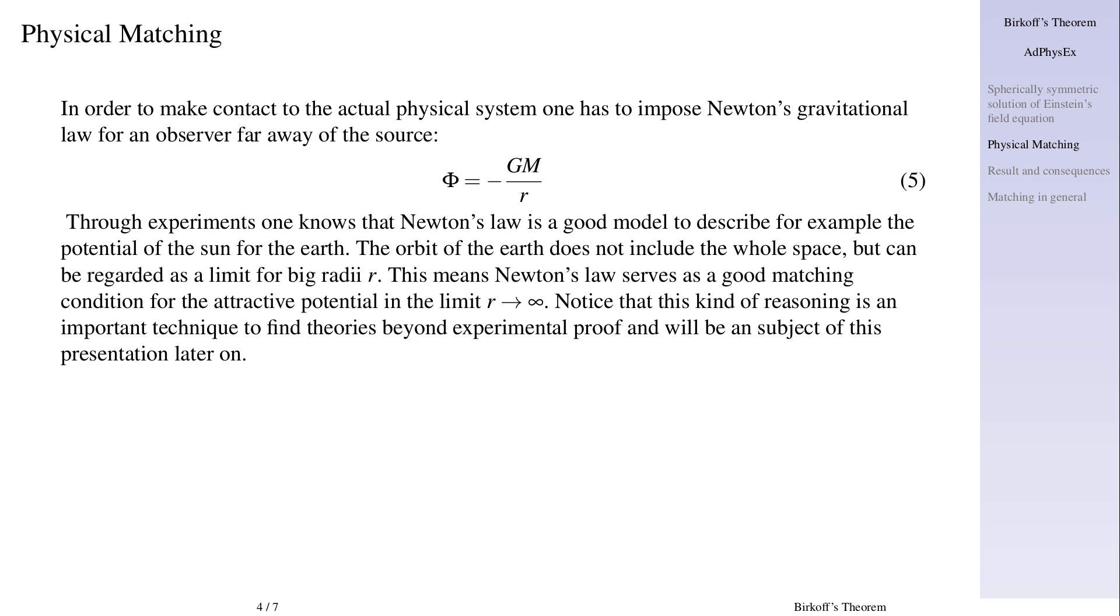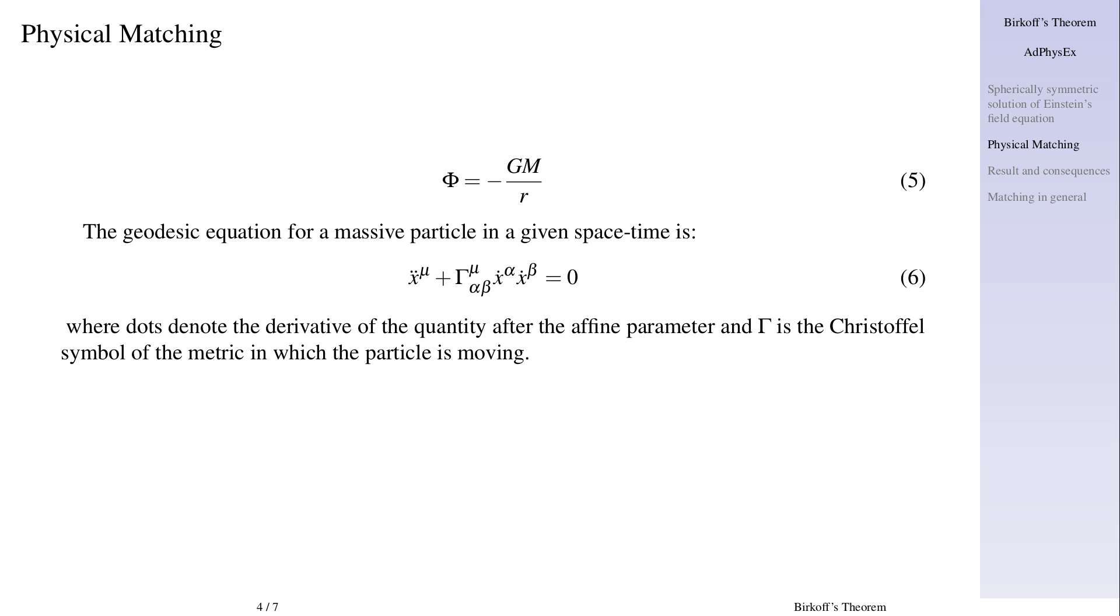The geodesic equation for a massive particle in a given space-time is x dot dot mu plus gamma mu alpha beta x dot alpha x dot beta equals zero, where dots denote the derivative of the quantity after the affine parameter and gamma is the Christoffel symbol of the metric in which the particle is moving.